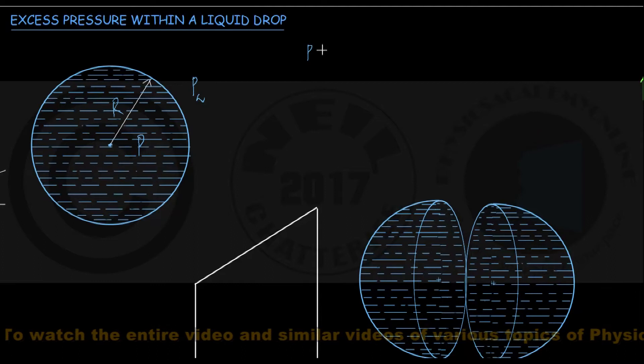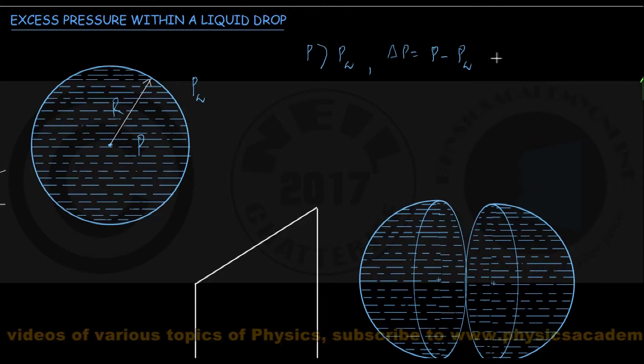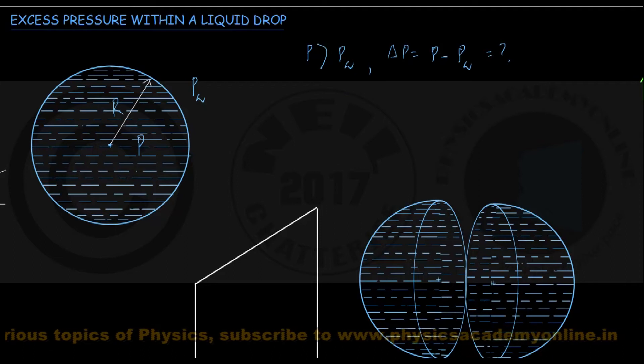The pressure inside P exceeds the pressure outside, and the difference in pressure delta P is equal to the inside pressure minus the outside pressure. We are supposed to find an expression for this delta P in terms of the surface tension of the liquid, gamma, and the radius of the spherical drop, R.